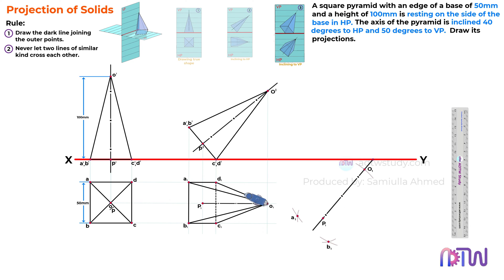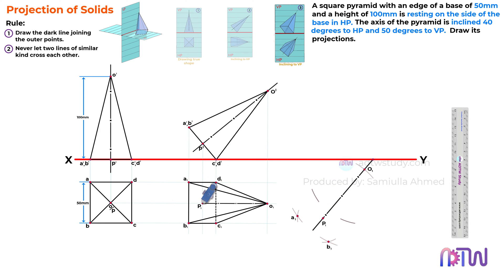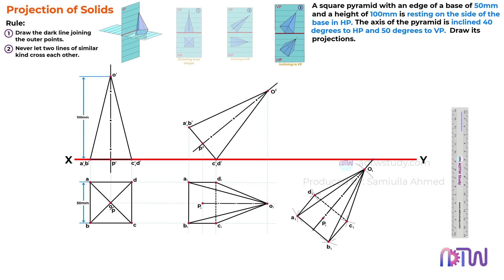Adjust the compass to the distance between point O1 and point D1, which is also equal to the distance between O1 and C1, and using O1 cut arcs as shown. Then adjust the compass to the distance between P1 and C1, which is also equal to P1 to D1, and using P1 as center cut arcs as shown. This gives us points C1 and D1. With all the required points obtained, join them to get the inclined square pyramid. This is the final top view of the pyramid inclined to both HP and VP.